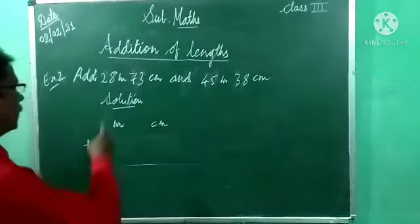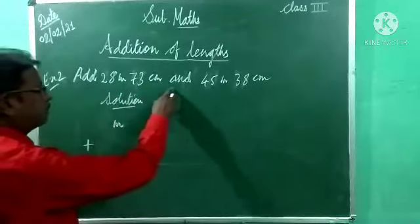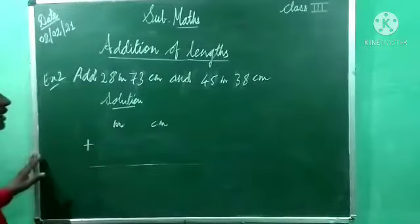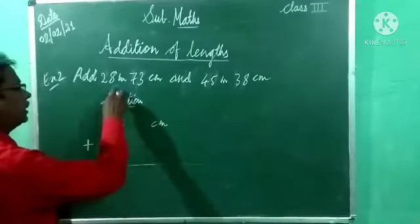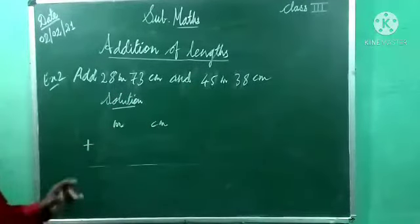Now second example: add 28 meter 73 centimeter and 45 meter 38 centimeter. Among these two numbers, any one number you can take up. So first, again here two units were meter and centimeter, make two columns.